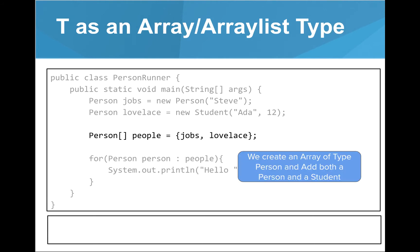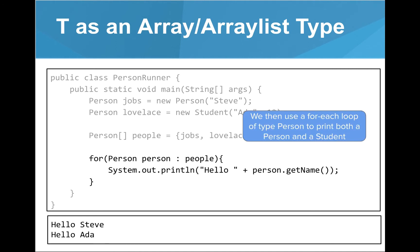In a similar example, we once again create a person and student object. This time, we are going to place them in an array of type person. Even though the lovelace variable is a student, we are able to combine it in the same person array with the jobs variable. We can then use an enhanced for loop to print out the objects. Notice that the enhanced for loop assigns both the jobs and lovelace variables to the person enhanced loop variable and then prints them out.